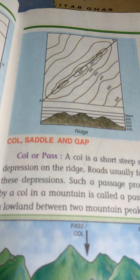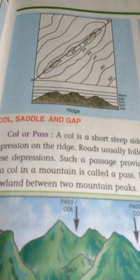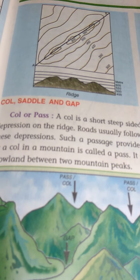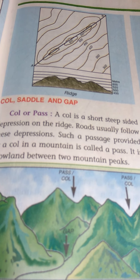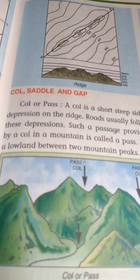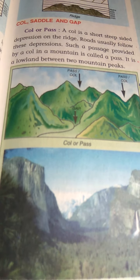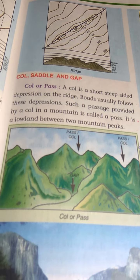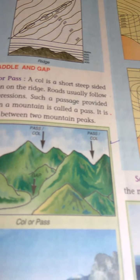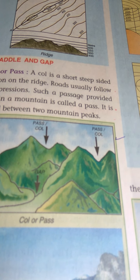Next one is col or pass. A col is a short, steep-sided depression on the ridge. Roads usually follow these depressions — meaning roads can pass through this gap or space between mountains. Next one is saddle — when the depression between mountain peaks becomes broad and low, it is called a saddle. That is given on top.